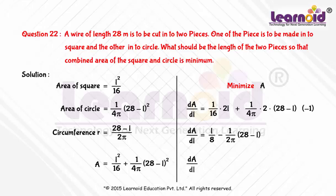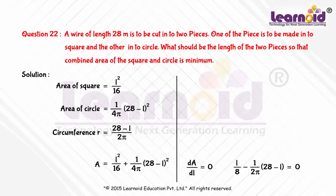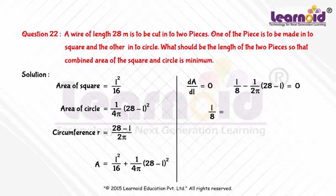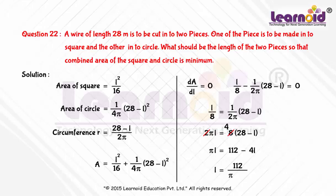Equating dA/dL equal to 0: L by 8 minus (1/2π)(28 minus L) equals 0. On solving, we get L equal to 112 by (π plus 4).